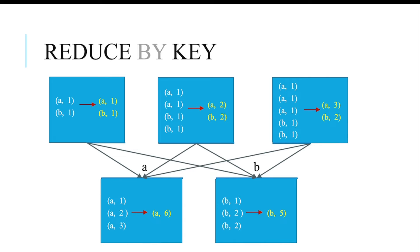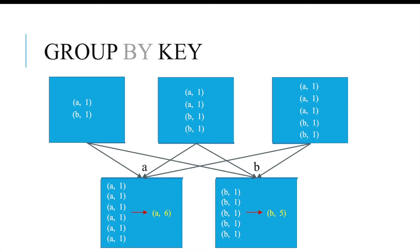The combine and transfer of same-key values happens at the partition level — at the map side — before the shuffle. In contrast, with groupByKey, the data is not combined at the map side. Instead, all values for a given key are shuffled to a single partition first, and then the combine operation happens. This makes your application slower because it is not reducing and clubbing correlated keys at the local level.